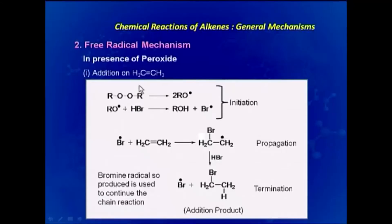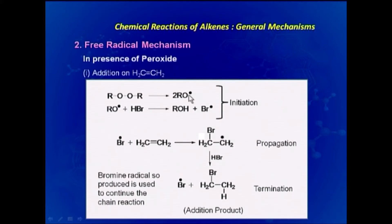In free radical mechanism, which generally takes place in the presence of a peroxide, we consider the example of addition to CH2=CH2, a simple ethylenic molecule. A peroxide with UV or other radiation gives two peroxide radicals, and when it reacts with an HBr molecule a Br free radical is generated.